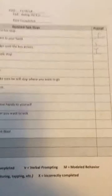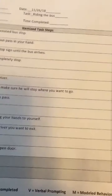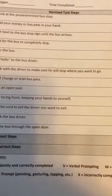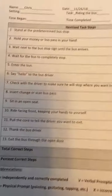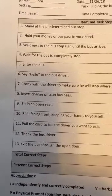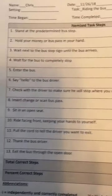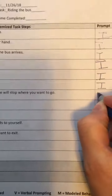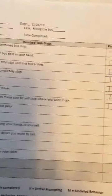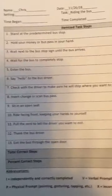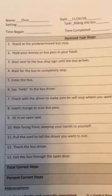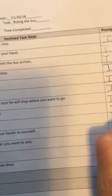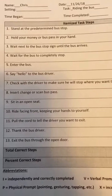I waited for the bus to completely stop before getting on — I'll mark that as completed independently. I got on the bus. Check. I said hello to the bus driver. Check. Being polite. And I made sure that the bus was going where I wanted to go, so I'll mark that as independent as well. I also put my change into the slot independently, so I'll mark that down as well.